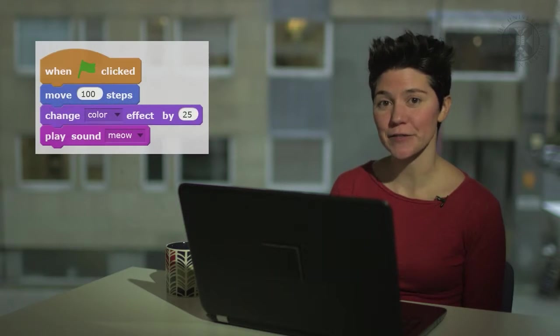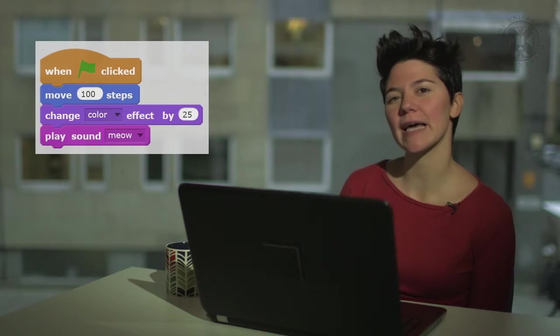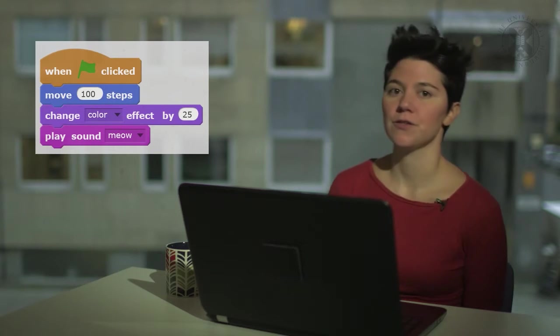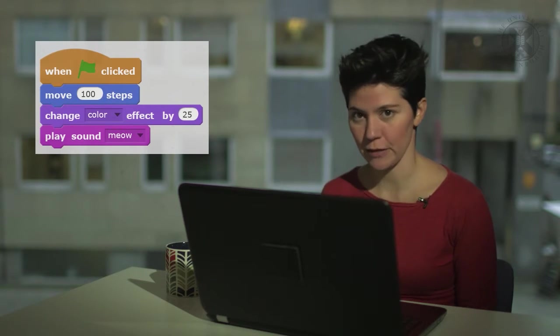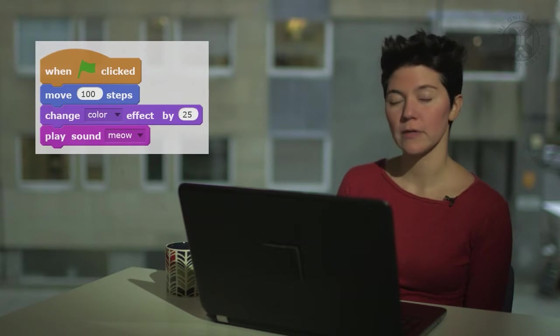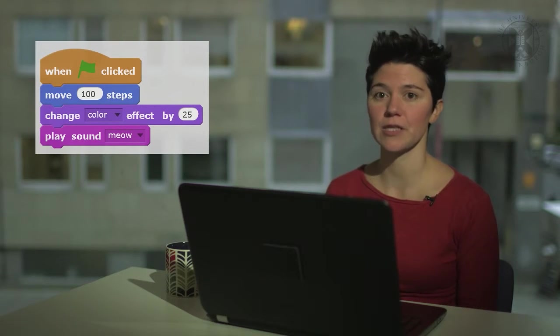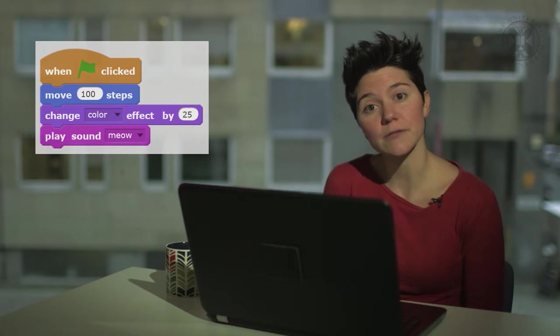Here is a variation of our previous program that makes the cat move a few steps, change its color and then make a meow sound. We now want to modify this program to make the cat meow only if it's reached the edge of the stage. How do we do this?